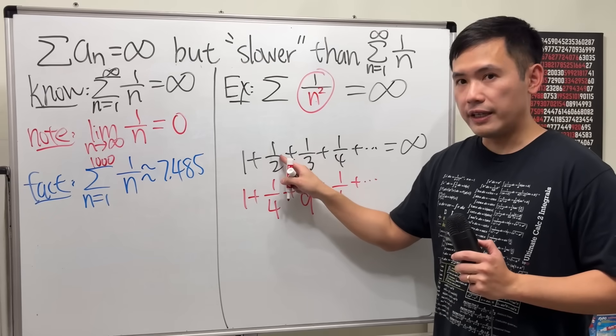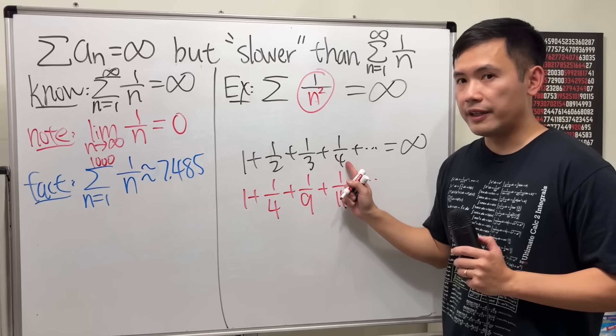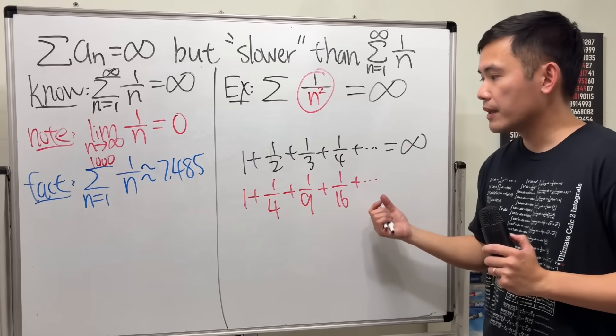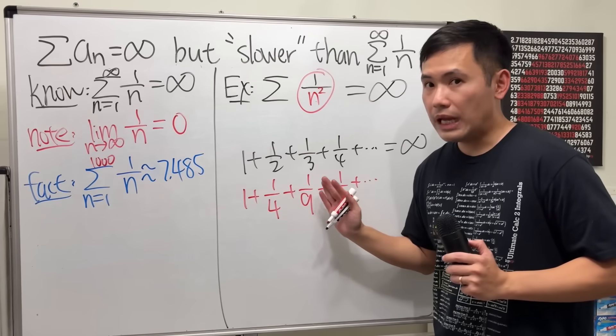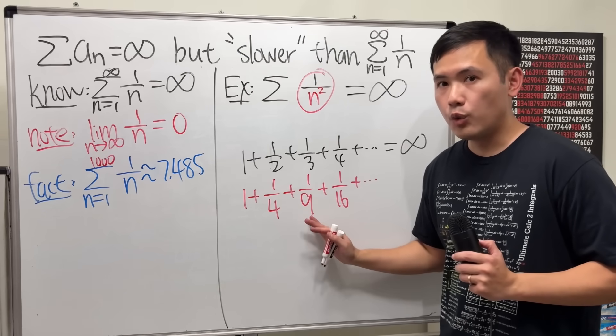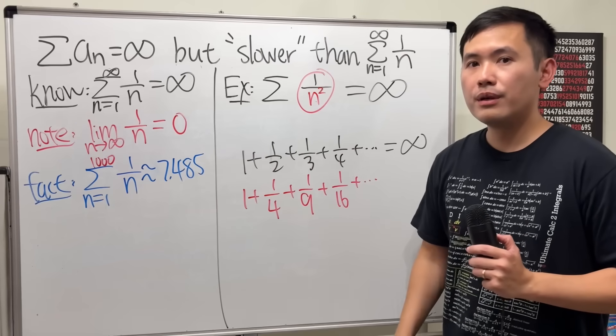Notice this is smaller than that. This is smaller than that. This is smaller than that. Etc. So if you add them up, let's say just up to 1,000, the result will be for sure smaller than 7.4. But...